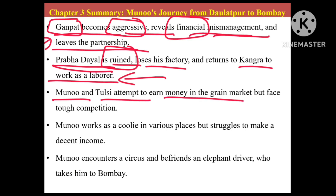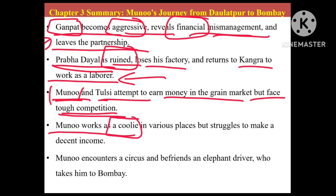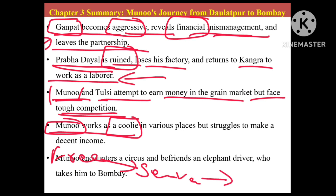Munnu works as a coolie. He did not find any other alternative after the closing of the pickle factory. His journey: first he was a free boy, then he started working as a servant, then as a helping hand in the pickle factory, and now he was a coolie. Life is not certain — what will happen in the next moment we cannot know, and we should not criticize anyone who is in this situation.